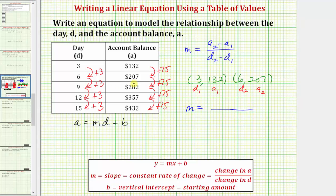So the slope M is going to be equal to, using our formula, A sub two minus A sub one would be 207 minus 132. D sub two minus D sub one would be six minus three, and this comes out to 75 divided by three, which equals 25.